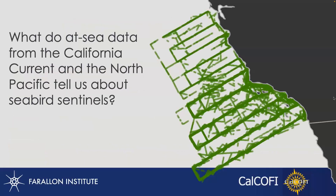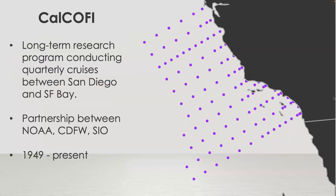I'll now transition to the second half of the talk: how I've been using at-sea data to get at mechanisms of how community patterns and distributions shift over time, and how to link them to environmental dynamics. The first part focuses on the California Current — mostly modeling approaches for defining species ranges and distributions. The second part covers a project in the North Pacific where I'm linking in more of the environmental physics.